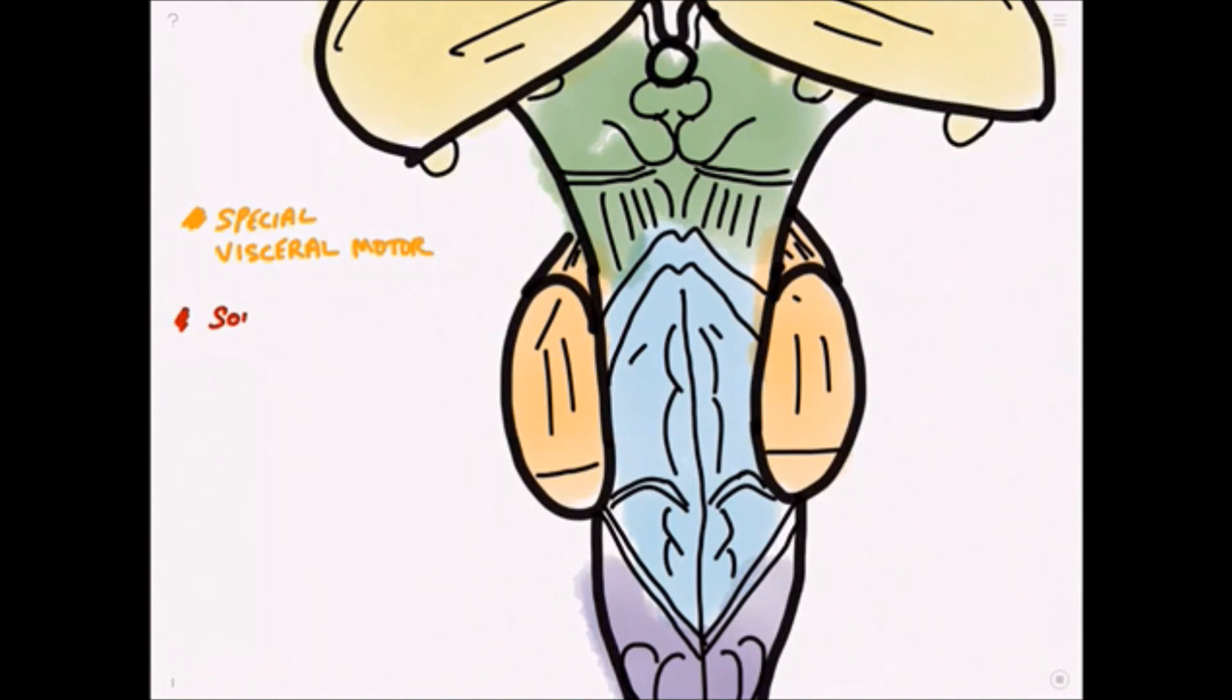We have somatic motor nuclei, and these contain the cell bodies of nerves which innervate muscles derived from the occipital somites.